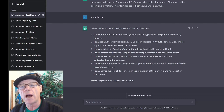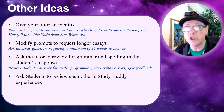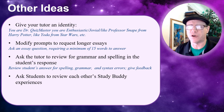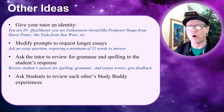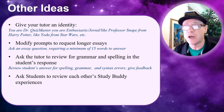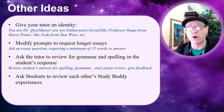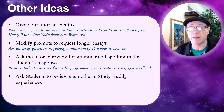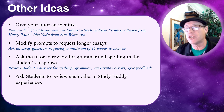Some other things you could do: give your tutor an identity — you are Dr. Quizmaster, enthusiastic, jovial, or like Professor Snape from Harry Potter or Yoda from Star Wars — and the AI will mimic some of the phraseology from those characters. You could modify your prompts to request longer or shorter answers, maybe asking for a minimum of 15 words. You could ask the tutor to evaluate the grammar and spelling of the student's response. And another idea is to have students review each other's work to see how they're using the AI to enhance their understanding.